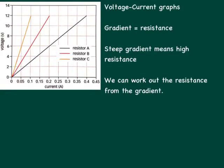So for an ohmic conductor, if you create a voltage current graph for it then you'll get a nice straight line going through the origin. And we have a graphic here on the left with three examples of resistors or conductors, A, B and C, and you can see that they have very different gradients.